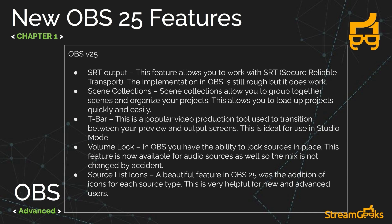In version 25, we got SRT output — a highly advanced, secure, reliable transport system that can send video across the world. We also got scene collections, which allow you to save an entire OBS project with all its scenes and sources, then start fresh with new ones, so you can toggle between multiple projects and load them up quickly. The T-bar came out in 25 as well, giving the ability to switch between preview and output in studio mode with a cross transition. We also got volume lock — to lock the volume once your mix is set — and source icons, which look much better for people new to the platform.